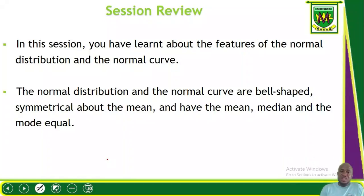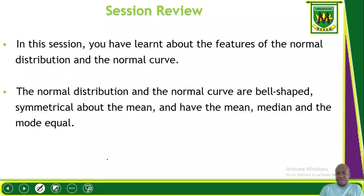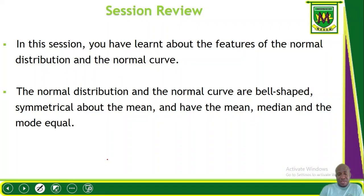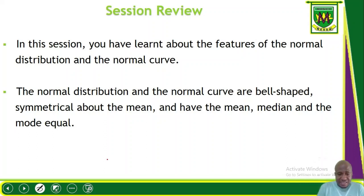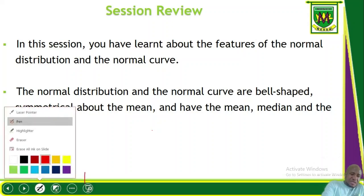This is the session review for the second session of Unit 5. You have learned about the features or properties of the normal distribution and the normal curve: it is bell-shaped, symmetrical, with mean, median, and mode equal, and the two equal halves dividing from the mean. This is the end of the second session. Let's move to the third session.